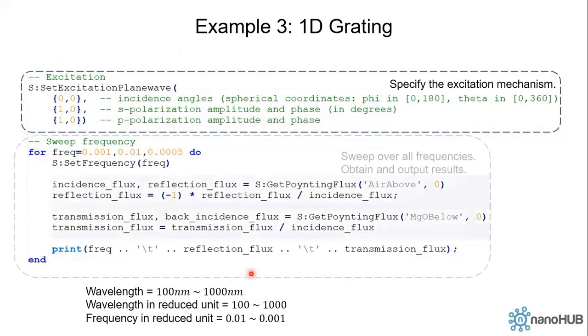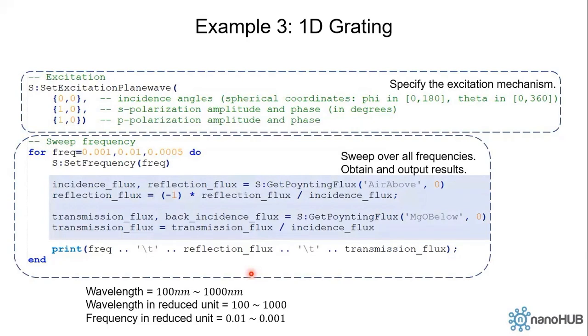Then we sweep the frequencies. We want to run from 100 nanometer to 1000 nanometer wavelengths. In reduced units, the wavelength is 100 to 1000 unitless. The frequency is the inverse of wavelengths, which is 0.01 down to 0.001.